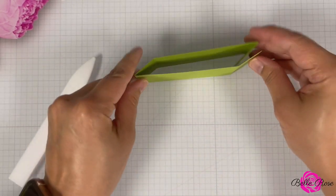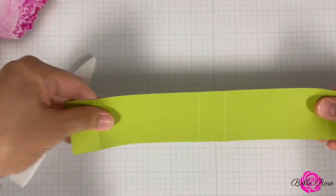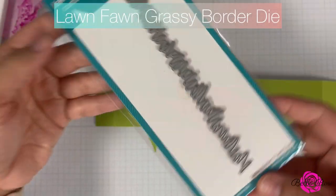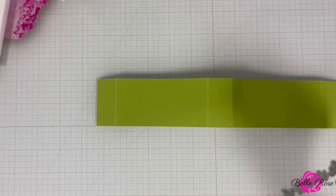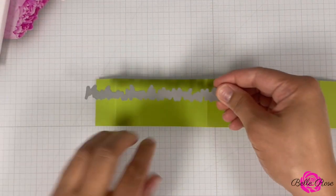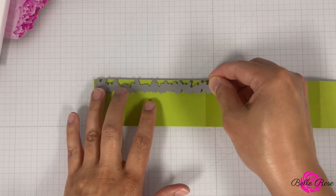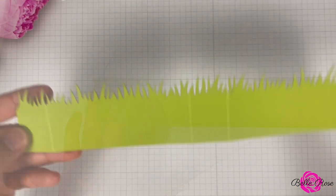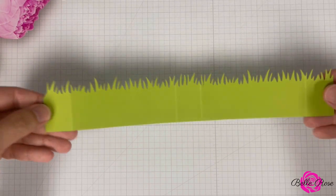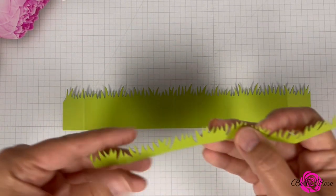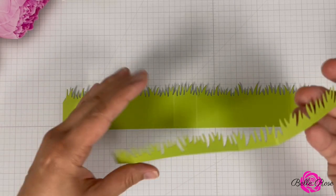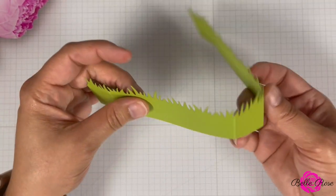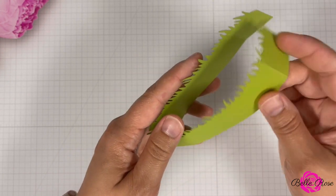I want this base to resemble grass. So I decided to bring in Lawn Fawn's grassy border die. I am now going to position the die on the base and then run it through my die cutting machine. And just like that, a grass pop-up card base. Now this part right here, I'm not going to toss it out. I'm going to actually use some of it for this project. And then the rest, I'm going to save for a future project.